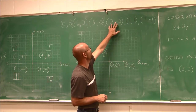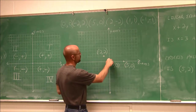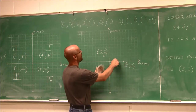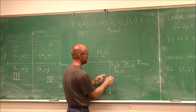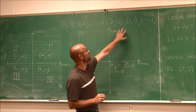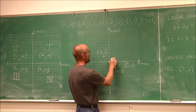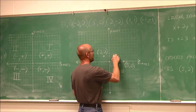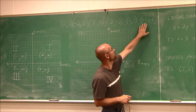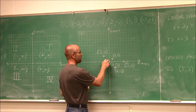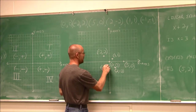Let's graph three more points. For (2, −2): 2 to the right in x and down 2 in y — I label that (2, −2). For (1, 1): 1 in the positive x direction and up 1 in y — I label that (1, 1). For (−1, −1): go left 1 in x and down 1 in y — I label that ordered pair (−1, −1).